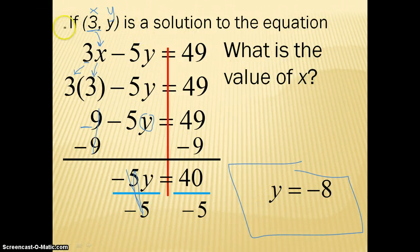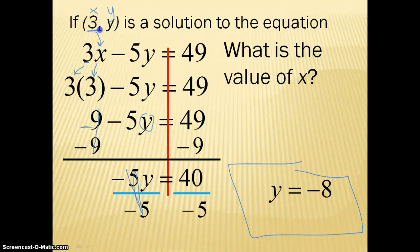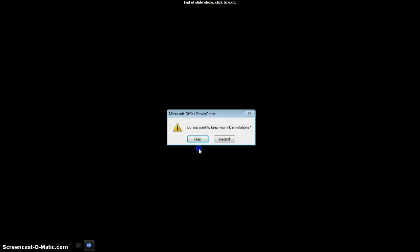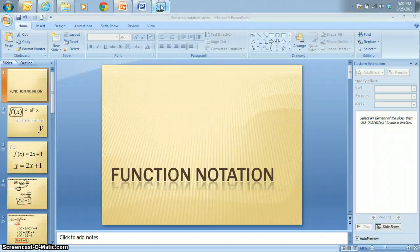Again, if it gives you an ordered pair, remember an ordered pair is always x comma y. Since it told me that x equaled 3, I substituted 3 in for x. Please, if you did not understand, go back and review this — because each one of these you're going to be doing in class tomorrow. So have a good night, I hope you learned something, and I'll see you tomorrow.